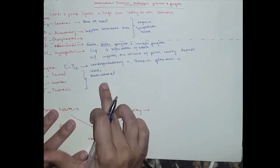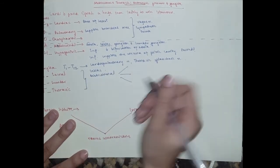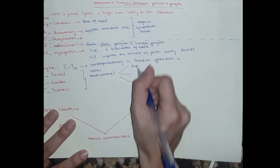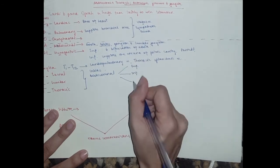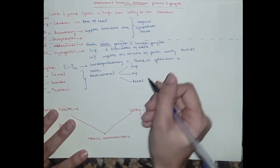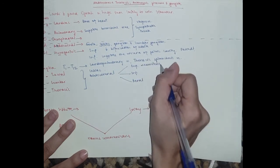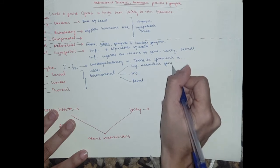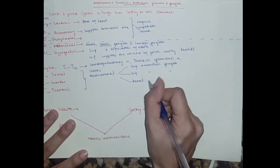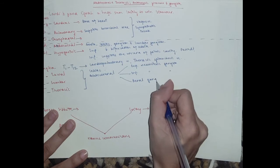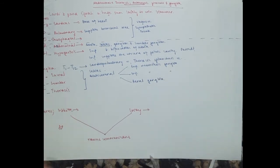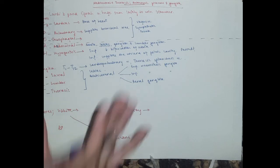And the aorticorenal consists of three which is the superior mesenteric, inferior mesenteric, and renal ganglia. And they're all a part of the pre-aortic ganglion or chain.